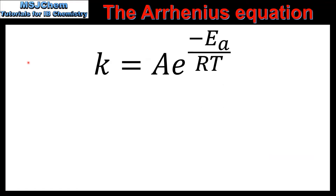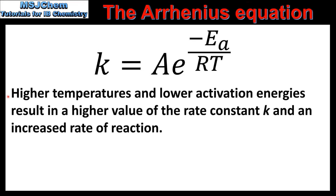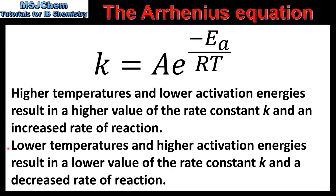To summarize: the Arrhenius equation allows us to see the effect of temperature and activation energy on the value of the rate constant K. Higher temperatures and lower activation energies result in a higher value of K and an increased rate of reaction. Lower temperatures and higher activation energies result in a lower value of K and a decreased rate of reaction.